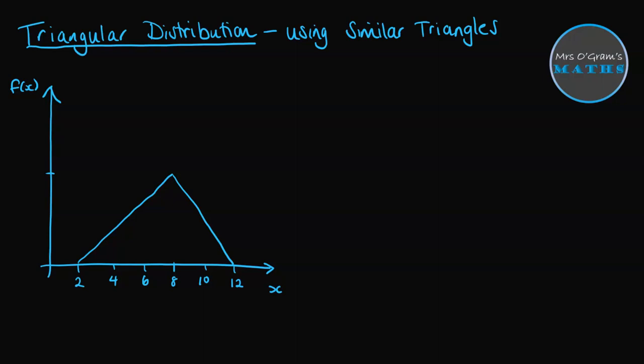So we can use that information to work out the height of that triangle. Now the previous video showed you how we got to this formula here. I'm just going to go straight to using it. It's basically knowing that the probability of this adds up to 1, so that area of that triangle makes 1. So we can use that to work out what the height of the triangle would need to be. So our 2 over b minus a becomes 2 over 12 minus 2. So that's 2 over 10, or 1 fifth, which equals 0.2. So our height is 0.2.